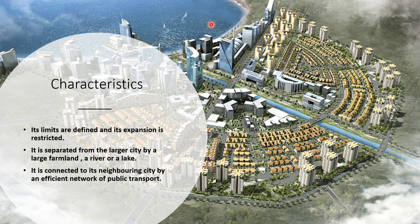The satellite city is separated from the larger city by a large farmland, a river, or a lake. Here we can see a satellite town separated from the metropolitan city by a huge lake. It is normally connected to its neighboring city by an efficient public transport network. We can see how the city is very planned and well-connected by a network of commuting systems and public transport.